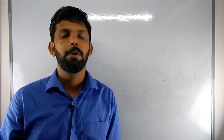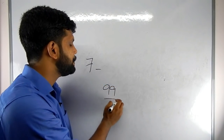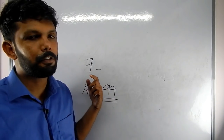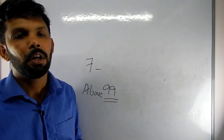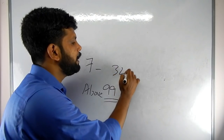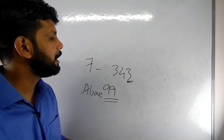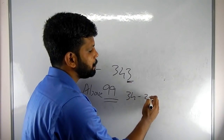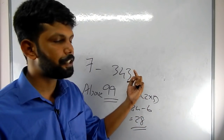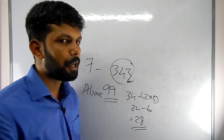Now we will discuss the divisibility rule of 7. We take the last digit, double it, and subtract from the remaining number. For example, with 343: double the last digit 3 to get 6, then 34 minus 6 equals 28, and 28 is divisible by 7, so 343 is divisible by 7.